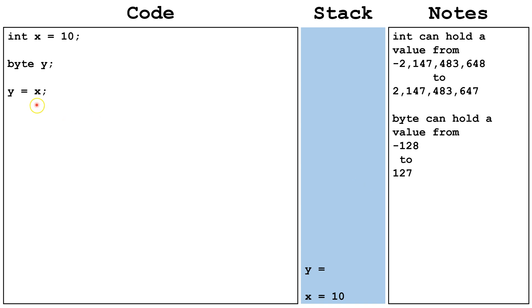On this line of code, we are setting the byte y variable equal to x. This is going to generate an error, because we need to narrow x. In this case, the value of x10 is well within the range of what a byte can hold. However, the compiler is going to be concerned that x may not always be within the range we want.